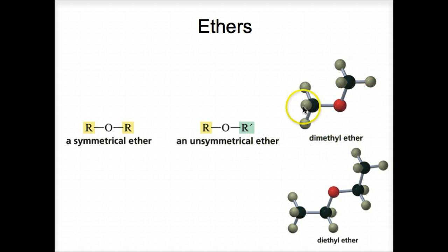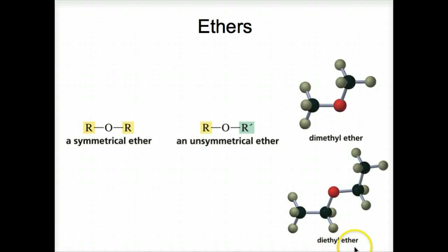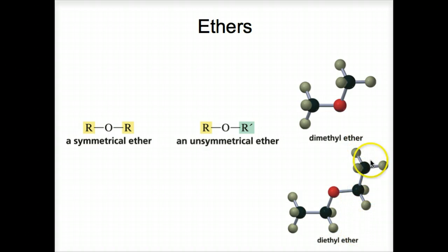Here's dimethyl ether — that's a symmetrical ether. And here's diethyl ether, with two ethyl groups, one on each side. So both of these are symmetrical ethers.